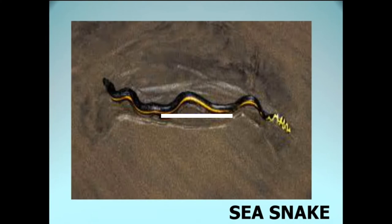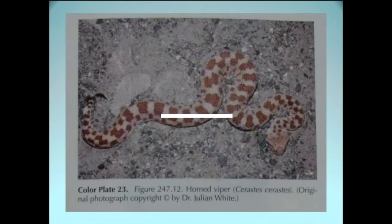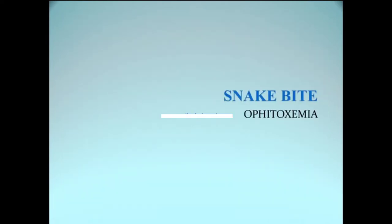This is a banded krait, this is a coral snake, and this is a sea snake. Sea snakes have small bodies, not as long as cobras. This is again a viper — you see the typical print on the body — and this is a horn viper, which has horn-like structures on its head and a large triangular head compared to the body. These features help in identifying the snake.